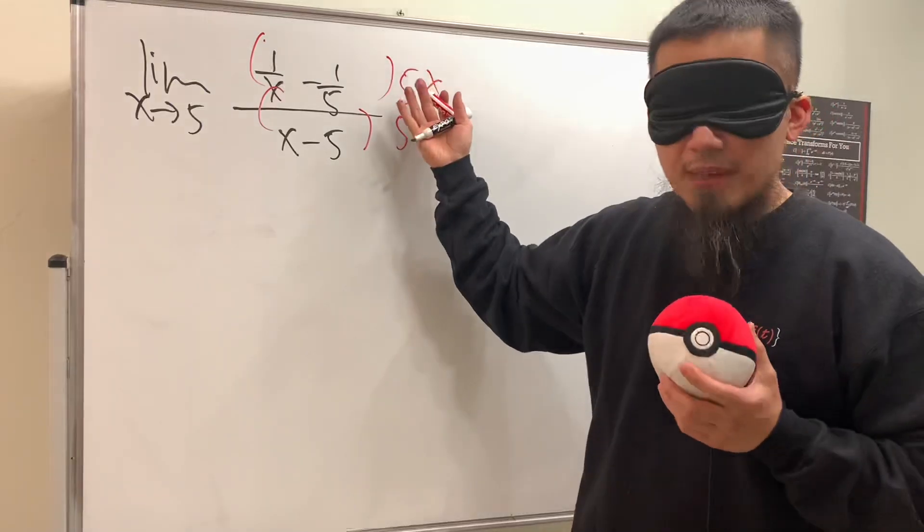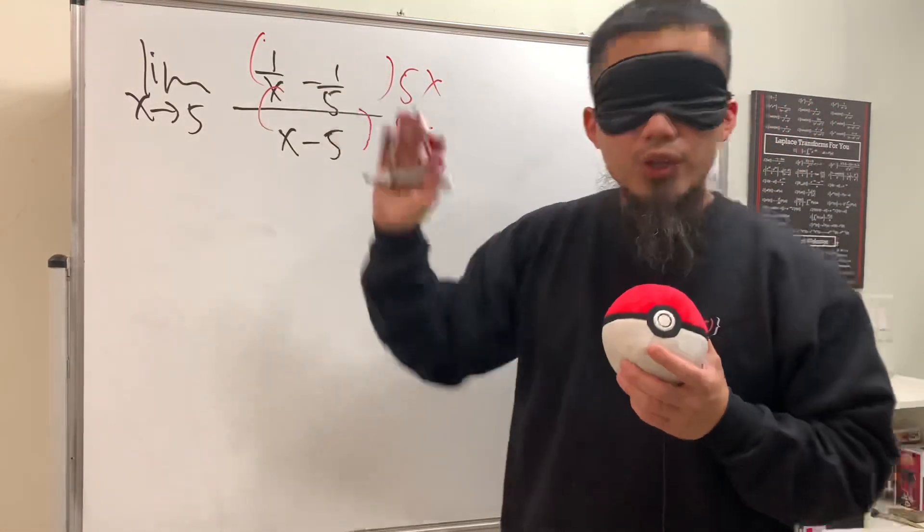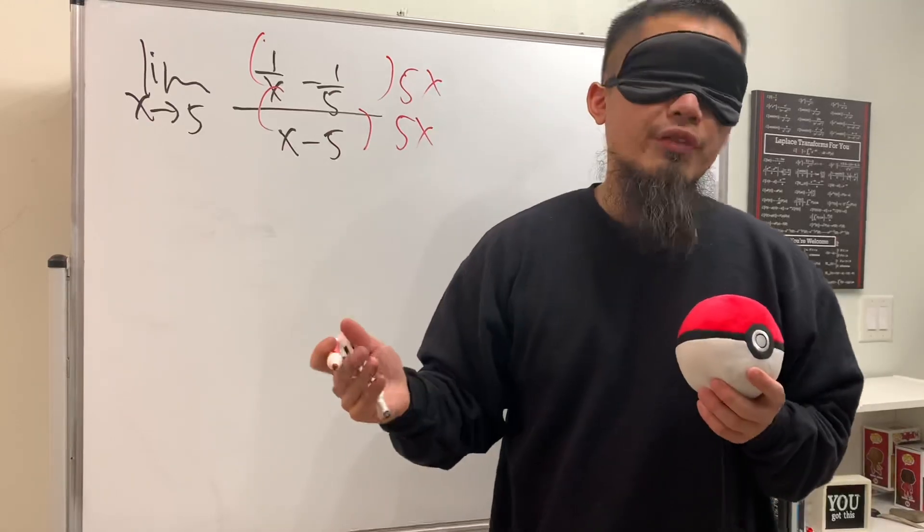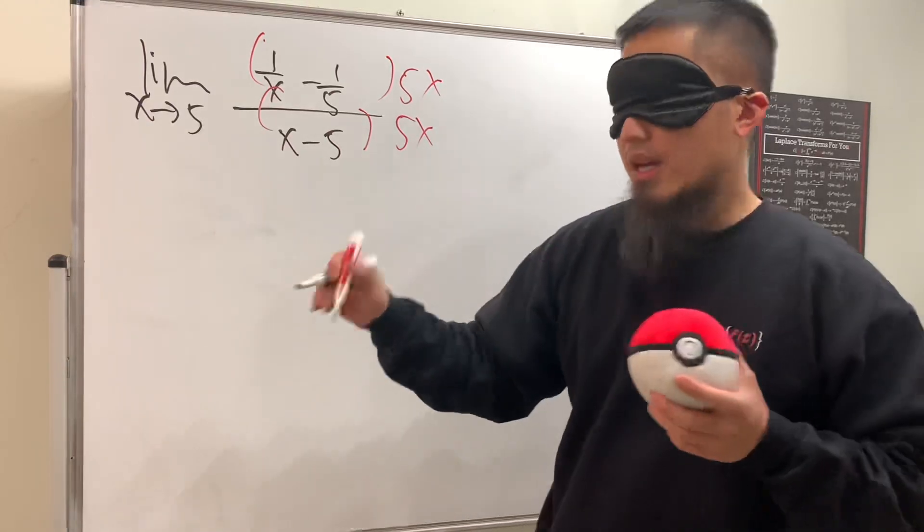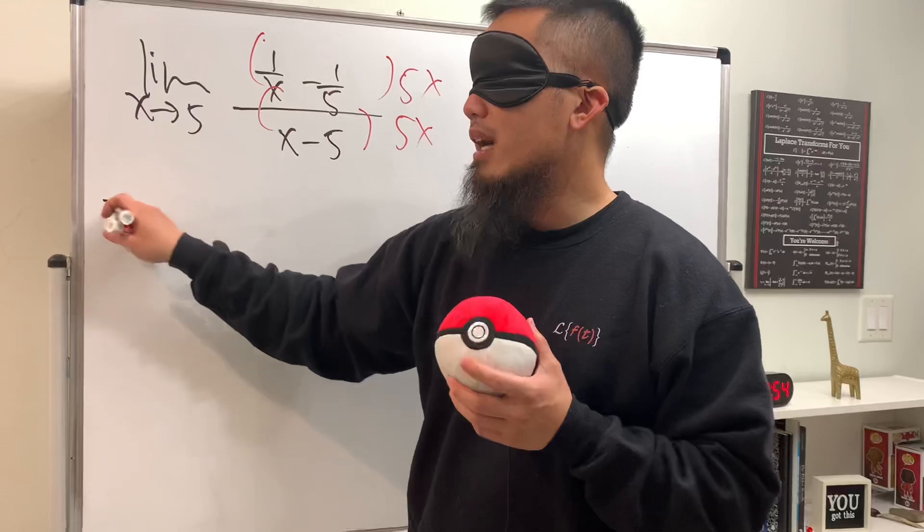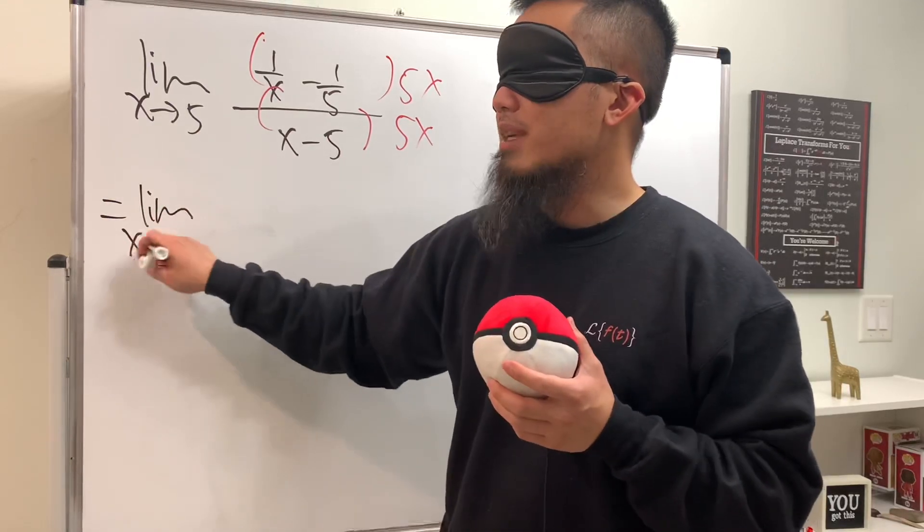...and that's the least common denominator of the small fractions, we can get rid of the complex fraction situation. We're going to write down the limit as x approaching 5 again.